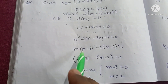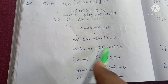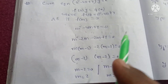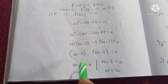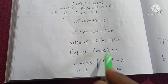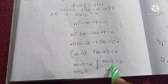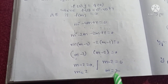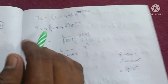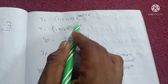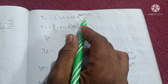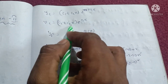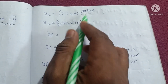Factoring: m² - 4m + 4 = (m-2)(m-2) = (m-2)² = 0. Therefore m - 2 = 0, giving m = 2 (repeated root). Since both roots are equal, we have same/repeated roots.